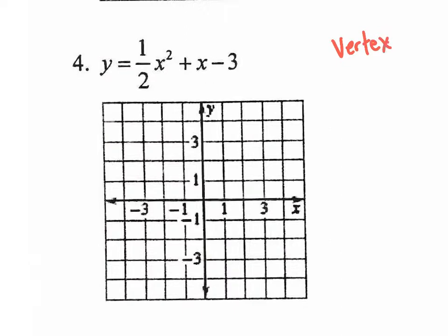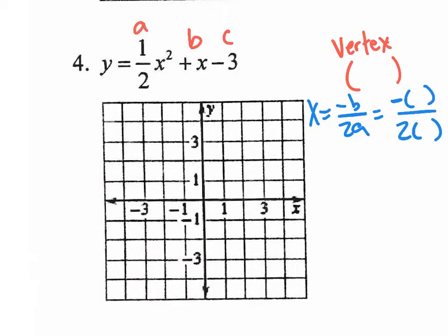The vertex is a coordinate. You find that coordinate by doing x equals negative b over 2a. And when you use the formula, use parentheses instead of the b and the a. The a is 1/2, the b is 1, the c is negative 3. So the b value is 1, the c value is negative 3, we don't use the c value. The a value is 1/2, plug it in.